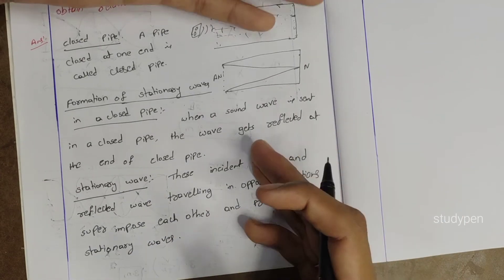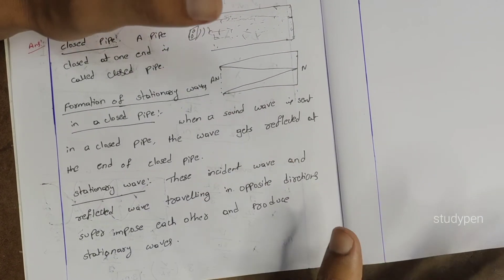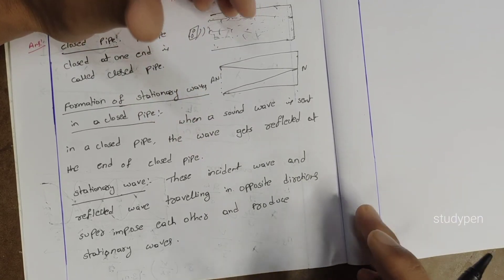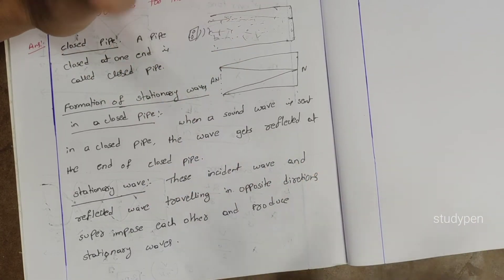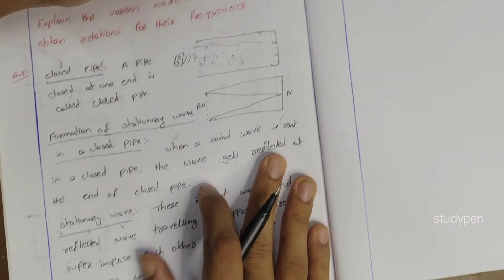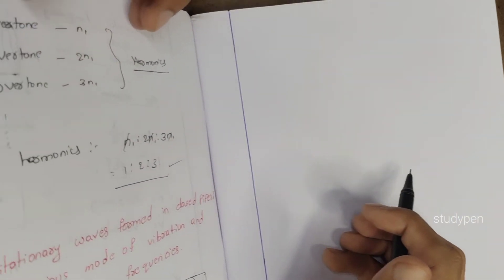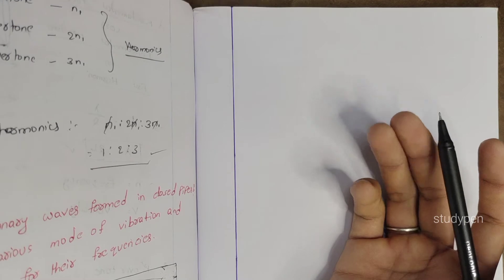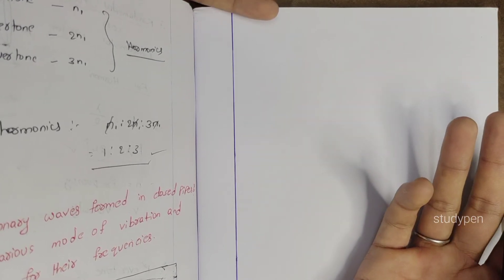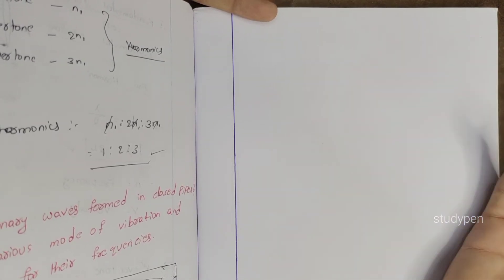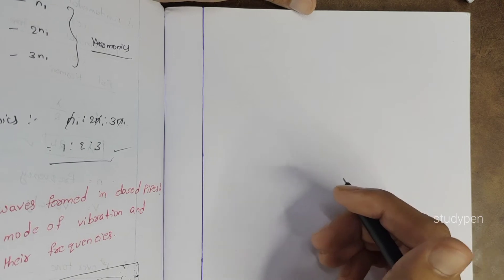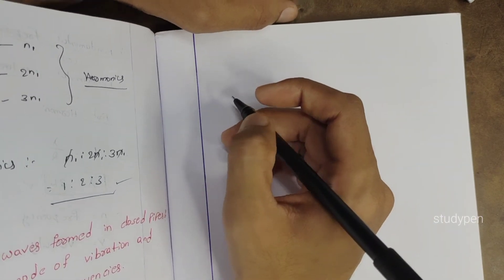So always: node means amplitude is zero, and antinode means amplitude is maximum. Node: amplitude = 0. Antinode: amplitude = maximum. The notation is as follows.